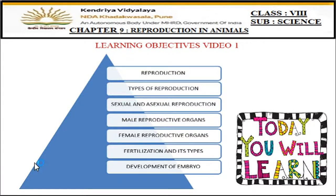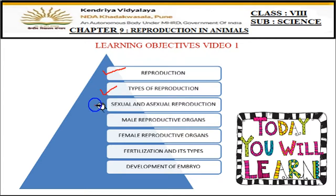Hello students and welcome to the online session of Class 8 Science, Chapter 9: Reproduction in Animals. This is the first video of this lesson. Today we will learn about reproduction, the types of reproduction — sexual and asexual reproduction — the male reproductive organs, the female reproductive organs, fertilization, its types, and the development of the embryo.